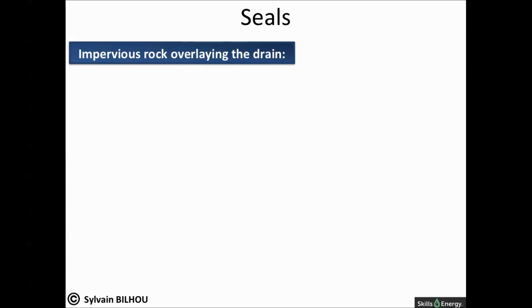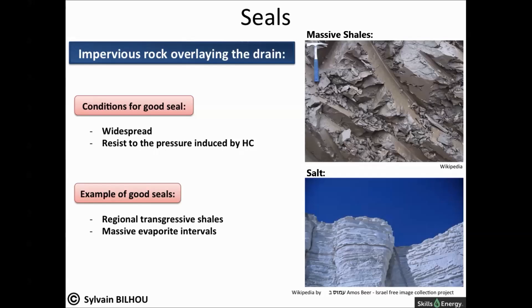To be efficient at the basin scale, the seal should correspond to a widespread formation overlying the drain and the reservoir. It also has to be thick enough to resist the pressure induced by the hydrocarbons. Regional marine shales or massive evaporite intervals have those characteristics. Evaporites are deposited in dry environments by evaporation processes — a good example is salt layers.